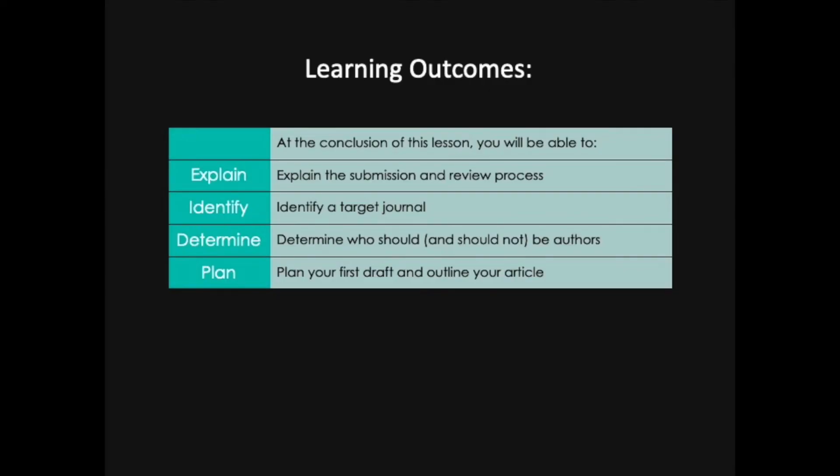As we wrap up, I'd like to reiterate the learning outcomes for this lesson: explain the submission and review process, identify a target journal, determine who should and should not be authors, and plan your first draft and outline your article. Please don't move on to the next lesson until you have achieved all of these learning outcomes. Go ahead and get to work, and happy writing!